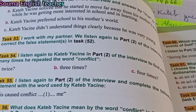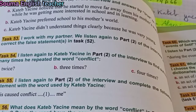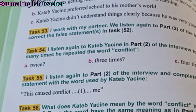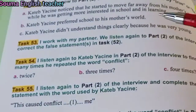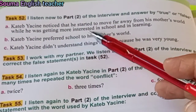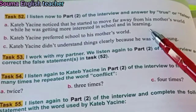During the events of Setif, there was a massacre. I was nearly shot. I was arrested and sent to prison with many of my schoolmates. Katib Yassine noticed that he started to move far away from his mother's world while he was getting more interested in school and in learning.